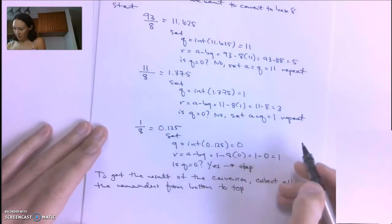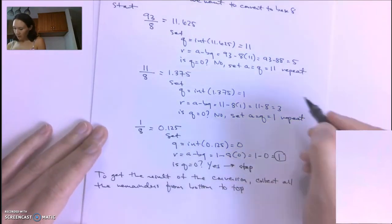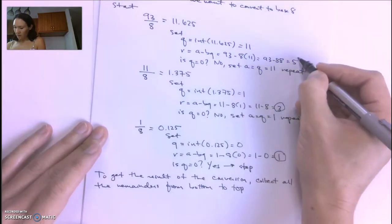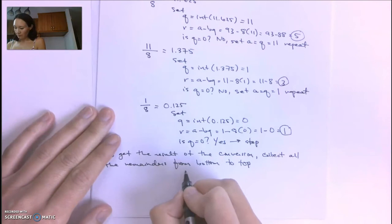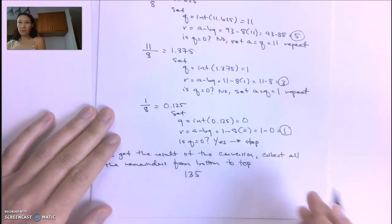From bottom to top, we have 1, then 3, then 5. So our remainders are 1, 3, and 5.